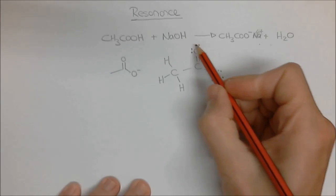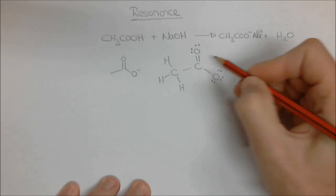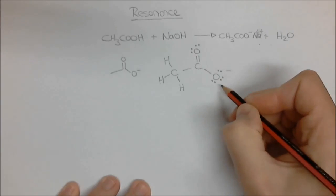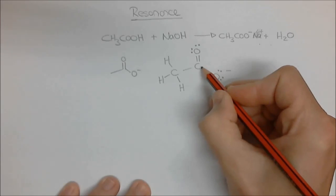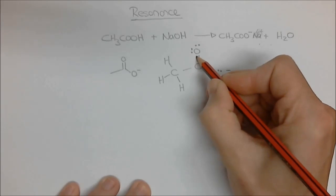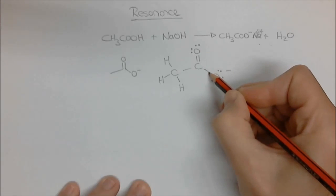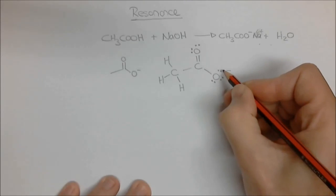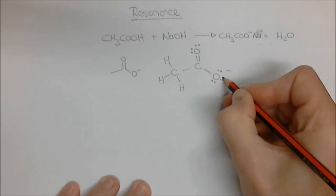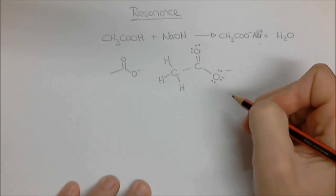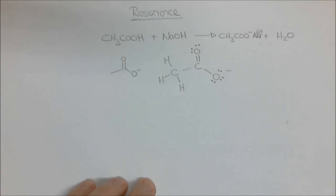Hopefully you ended up with a structure that looked something like this. There should be a negative charge on one oxygen. The carbon here has four single sigma bonds, and the other carbon has a sigma bond to that carbon, a sigma bond to one oxygen, a pi bond to the second oxygen, and a sigma bond to the third oxygen. Because this oxygen is negatively charged, it must have its octet — it ends up with six lone pair electrons, or three lone pairs.